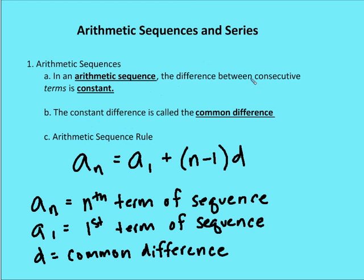So an arithmetic sequence, the difference between consecutive terms is constant. The example I gave, it was 3. That constant difference is called the common difference, and it's denoted by the letter d.